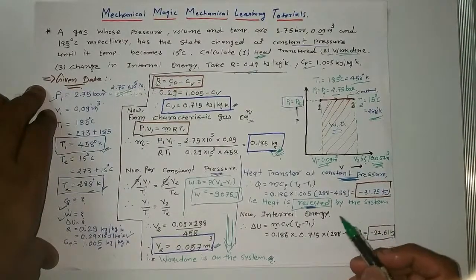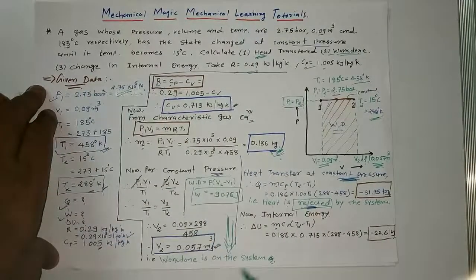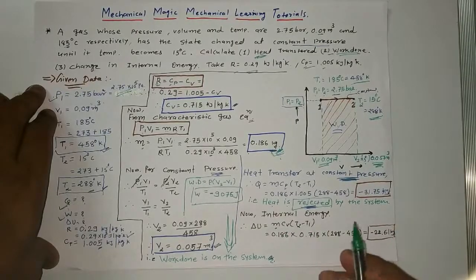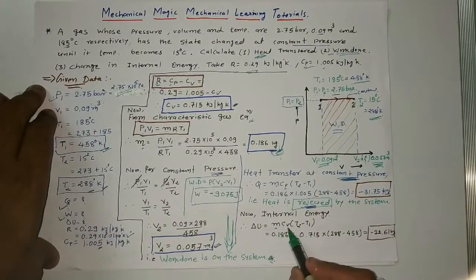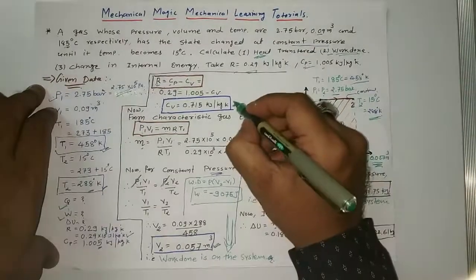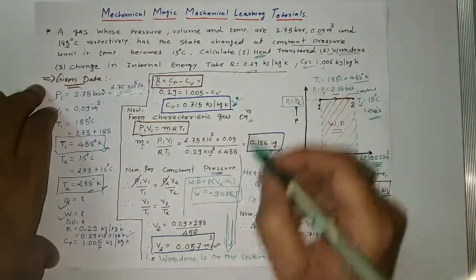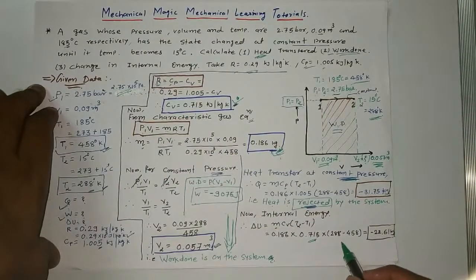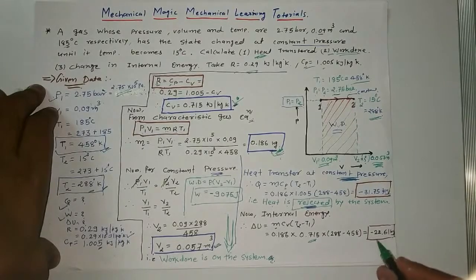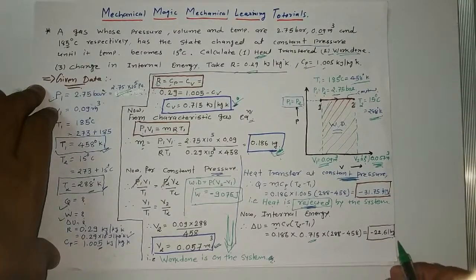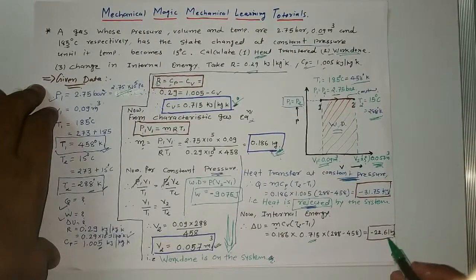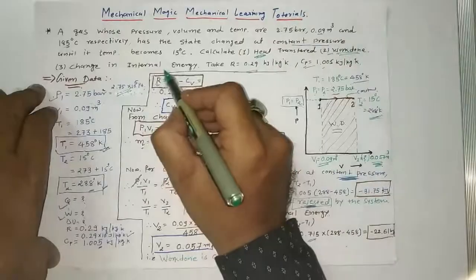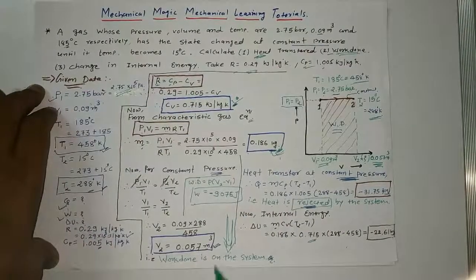For the change in internal energy: delta U equals m Cv delta T. Using the specific heat at constant volume Cv equal to 0.715 kilojoule per kg Kelvin and the temperature difference, the answer is minus 22.61 kilojoules. This completes the simple example for finding heat transferred, work done, and internal energy of the system. Thank you very much.